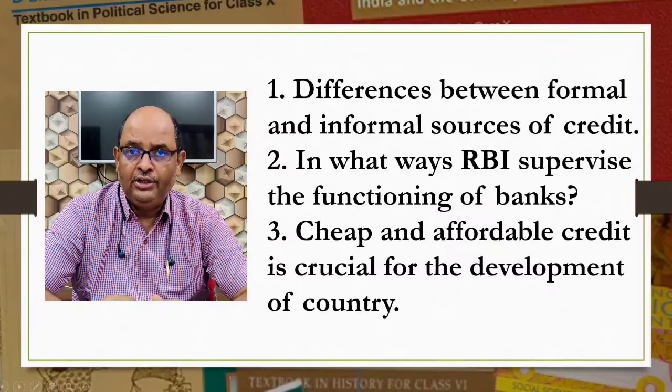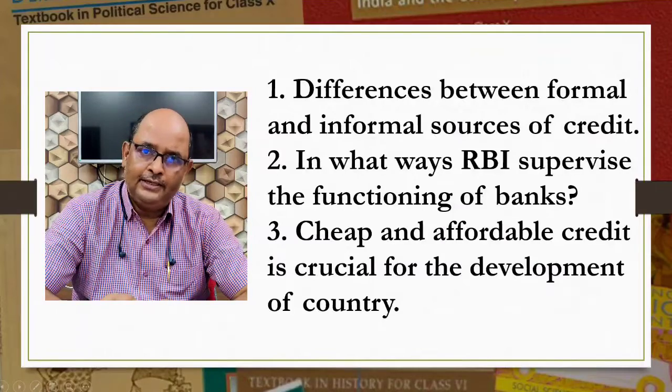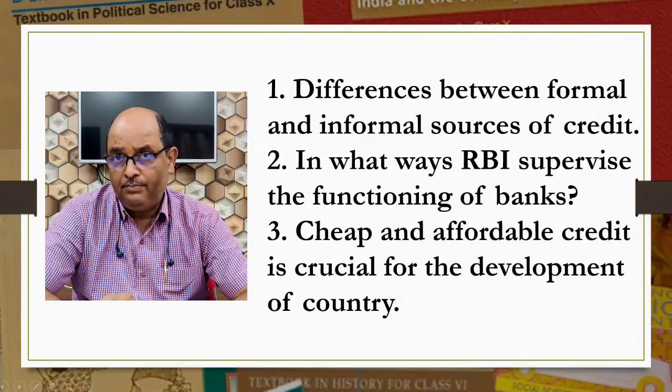In the previous class we saw the various sources of credit, namely banks, money lenders, landowners, cooperative societies, etc. We can now group them as formal sector loans and informal sector loans. Let us make a table and see the differences.